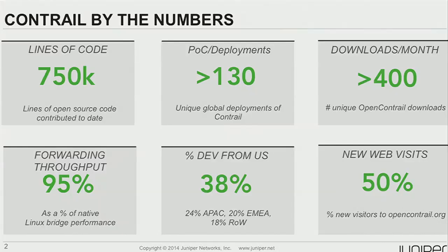Just a few tidbits in terms of Contrail by the numbers. The first two boxes on the left talk about software development momentum. We've now surpassed 750,000 lines of code contributed into the open source community. When we made our software generally available, we also released all of our software on GitHub under the Apache v2 license, except for the kernel piece which is under the GPL v2 license. With the permissive license, our intent is to stimulate the community and get a lot of interaction.